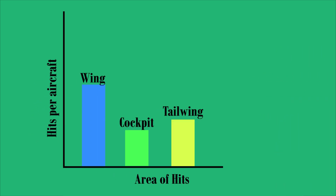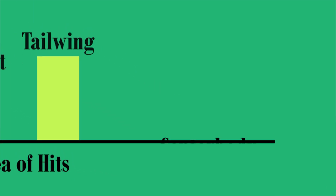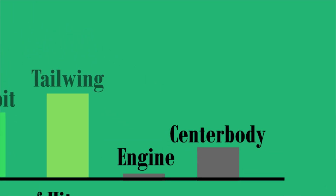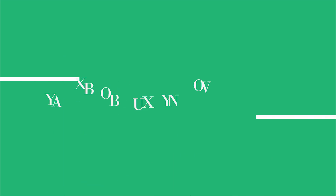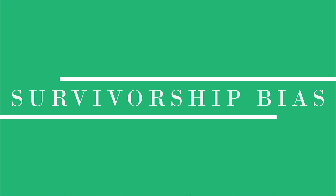Well, not exactly. Abraham Wald, an expert of statistics, suggested that they reinforce the parts that sustained little to no damage. But why? Simple — because unlike him, the brass was committing a logical error known as survivorship bias.